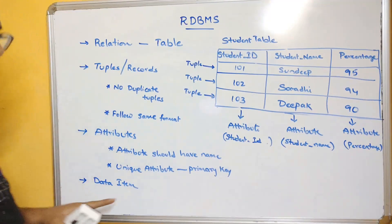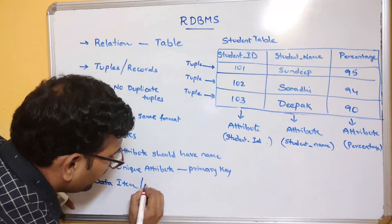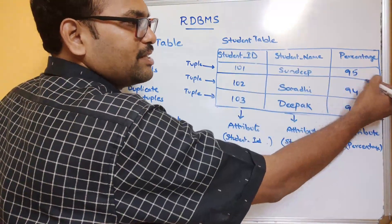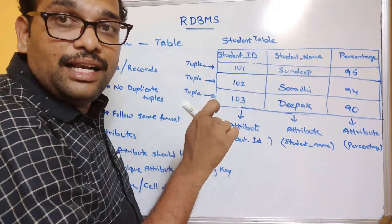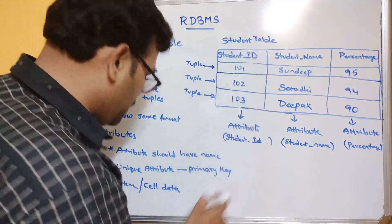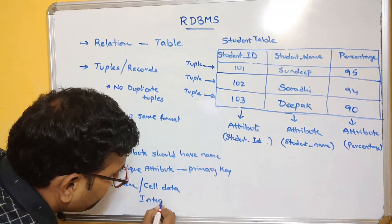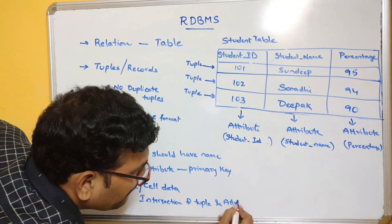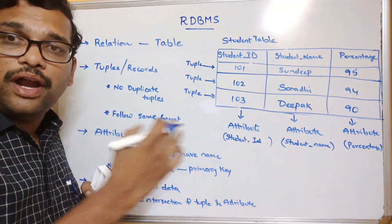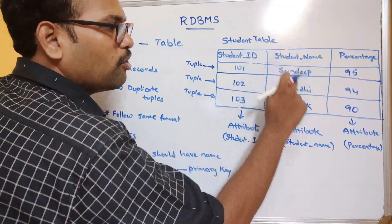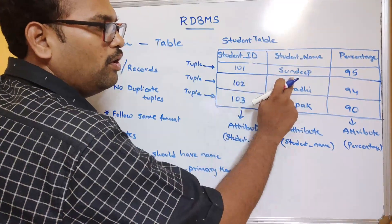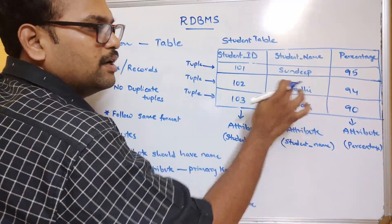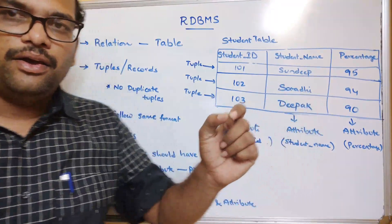The next terminology is data item, also called cell data. A cell is an intersection of a tuple and an attribute — simply put, the intersection of a row and a column. This data must be atomic, meaning it should have a single value. For example, student ID cannot be '101, 102' — that is not valid. It should have only one value, like 101. Similarly, a student name cell cannot contain 'Sandeep, ABC' — it must hold a single value.